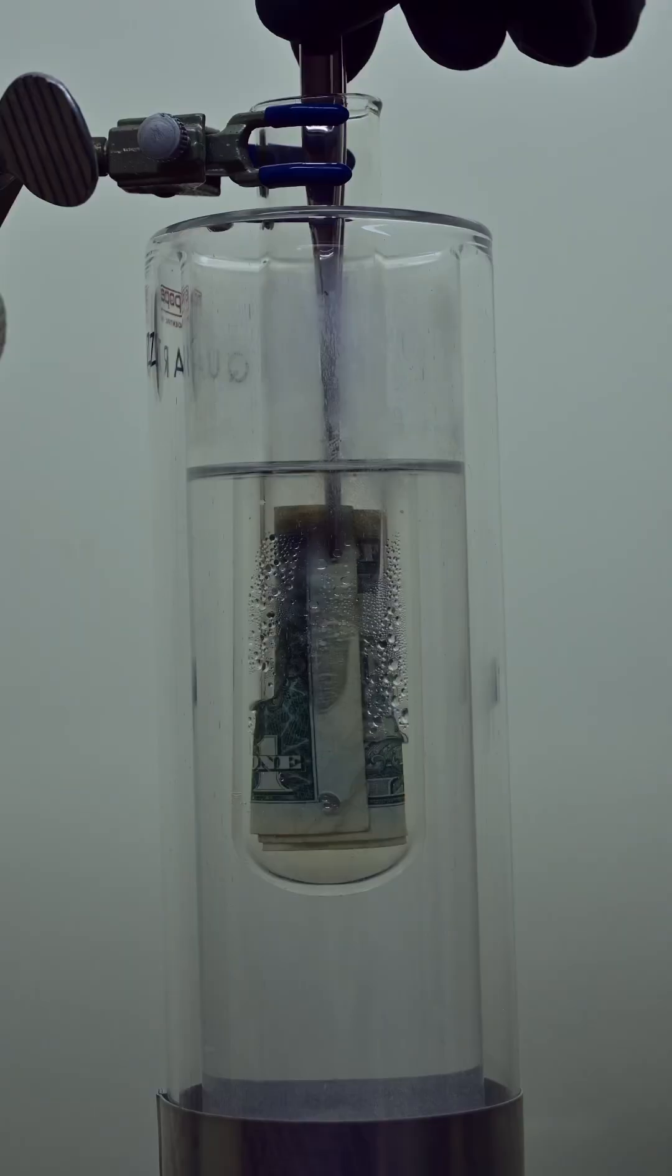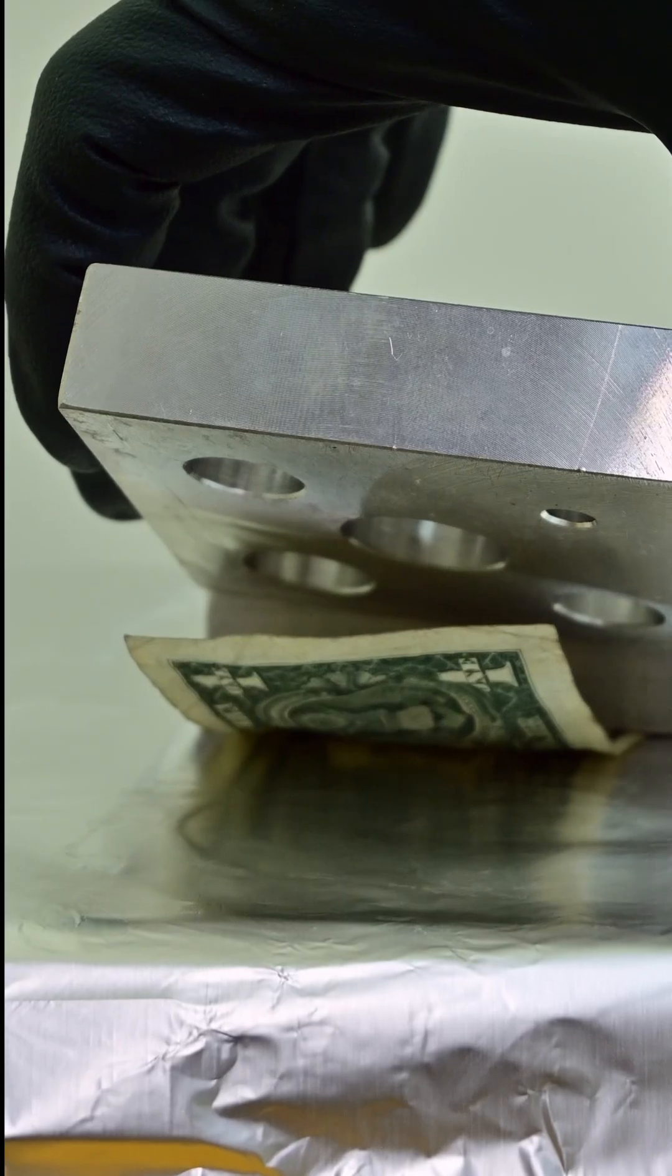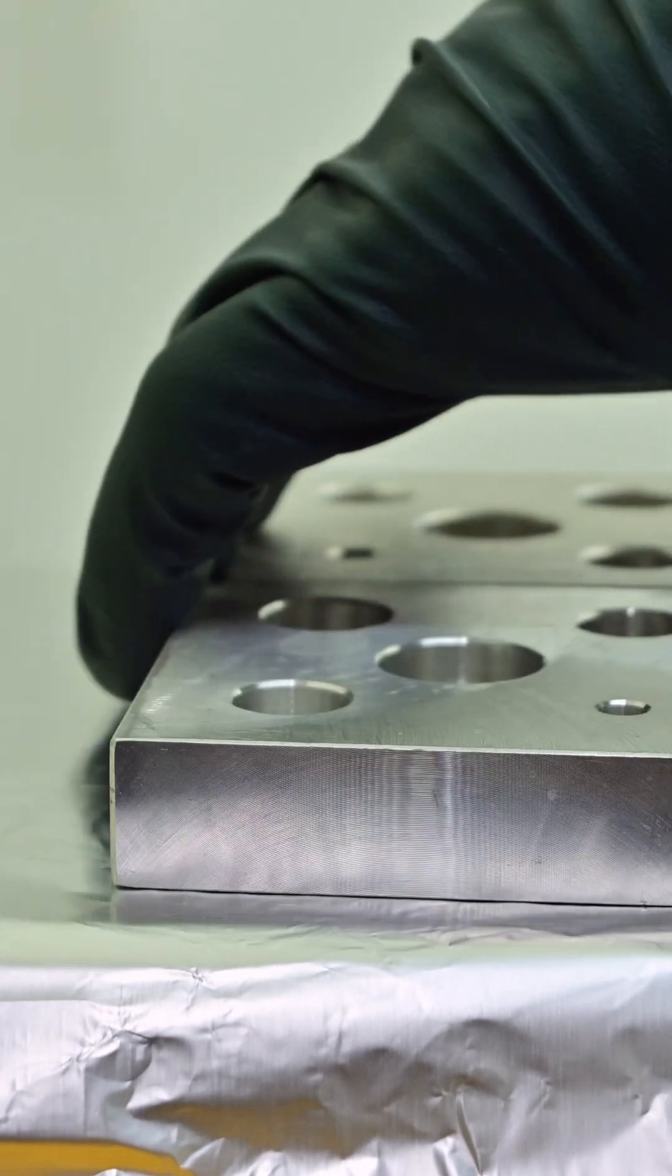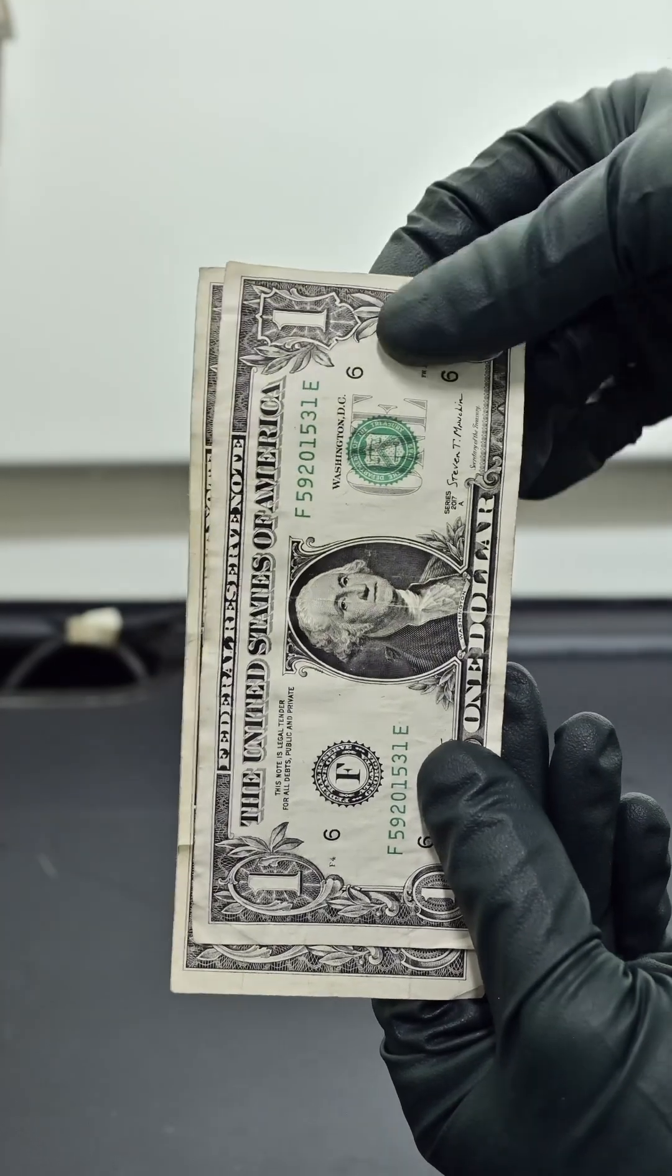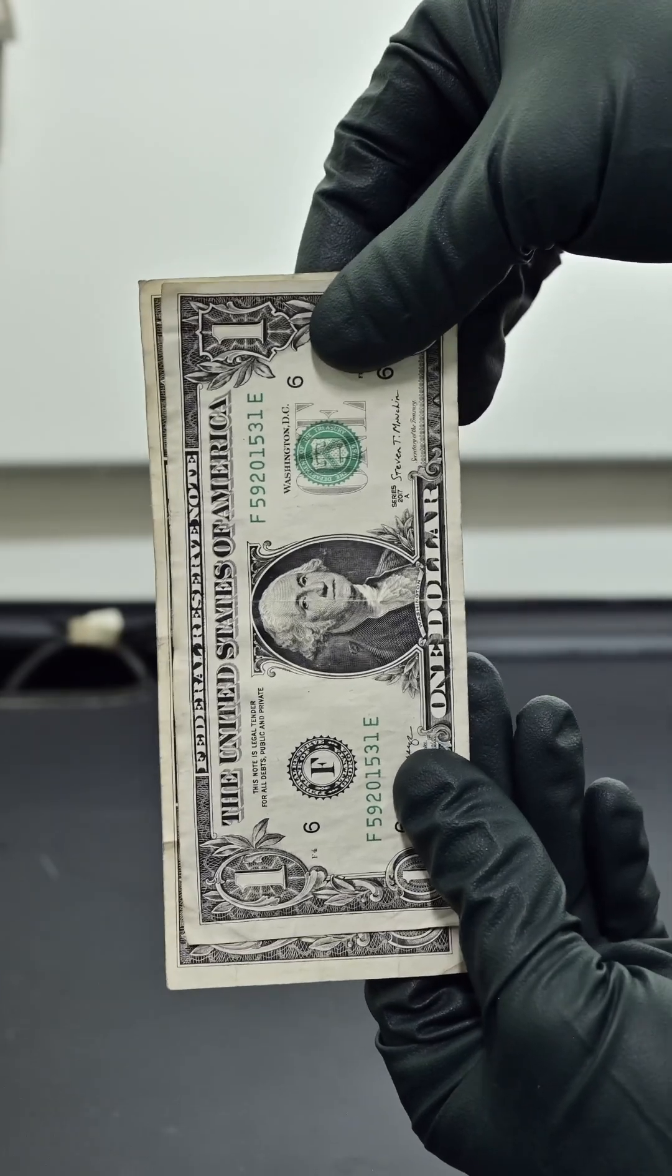But here's where it gets really interesting. Once I remove the bill and gently warm it up on a hot plate, the ammonia rapidly evaporates, causing those cellulose fibers to snap back in an even tighter arrangement, permanently shrinking the bill.